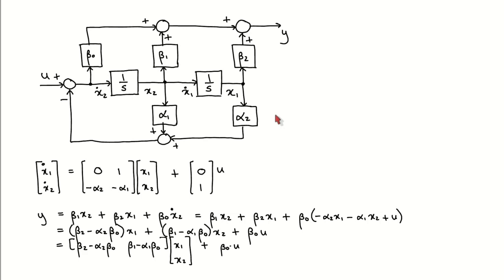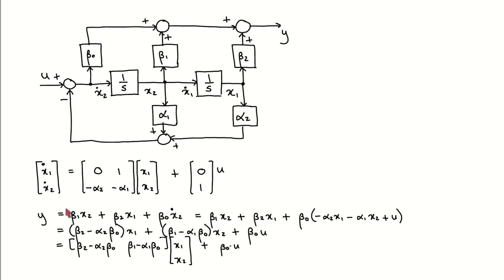Next, we take the block diagram and label the output of the integrators as the states. x1 is the output of the right integrator and x2 is the output of the left integrator; the integrator inputs are x1-dot and x2-dot. We can now write down the state equation: x1-dot equals x2, which gives the first line; x2-dot equals minus alpha-1 times x2, minus alpha-2 times x1, plus u, which gives the second line. For the output equation, from the block diagram y equals beta-2 times x1, plus beta-1 times x2, plus beta-0 times x2-dot.